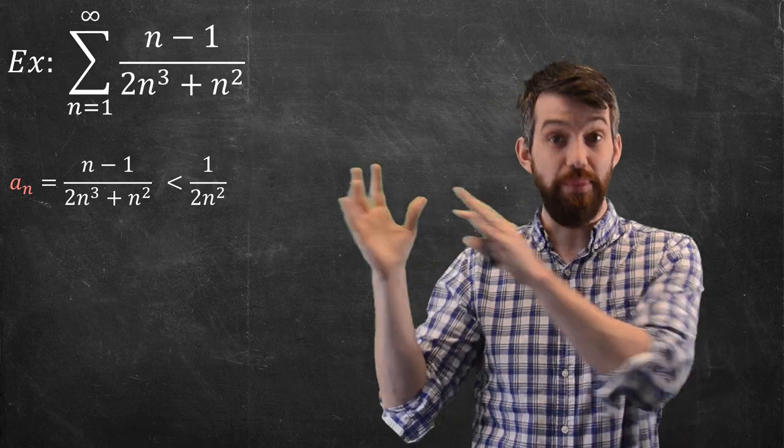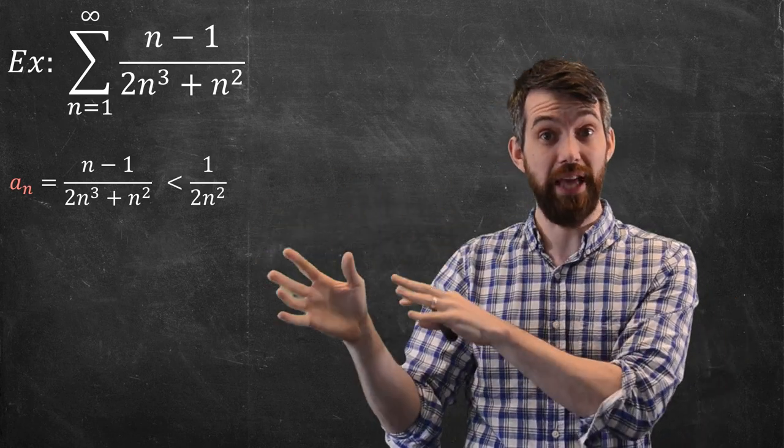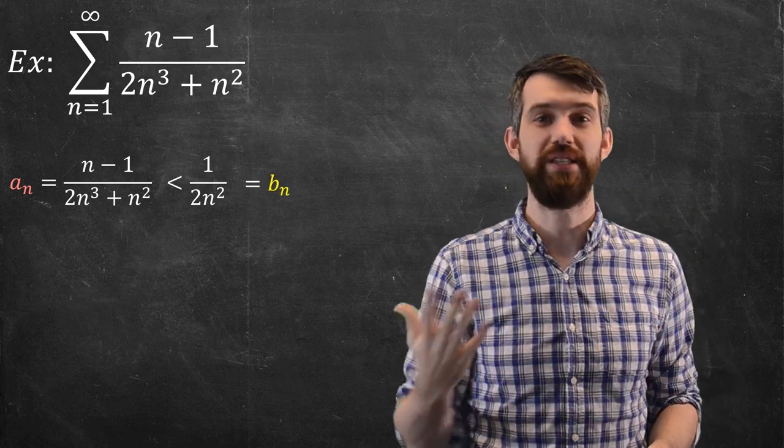So I have this inequality that's taken this messy thing, the AN that I didn't like, and related it to a BN which is much simpler.